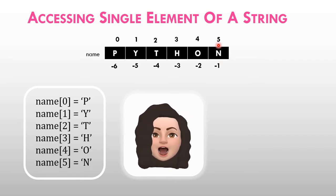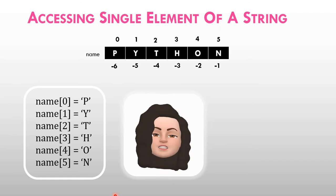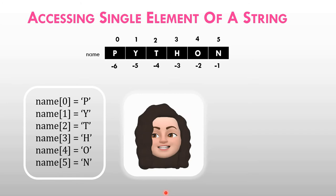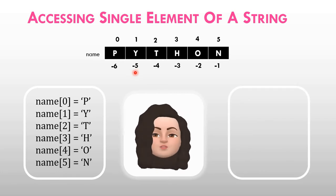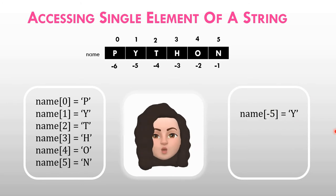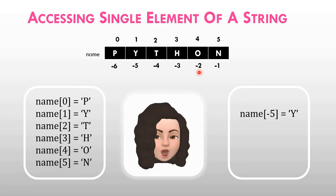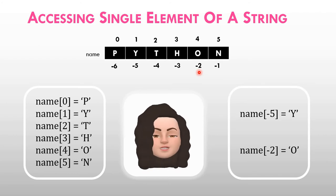We have accessed individual characters using forward indexing. If you want to access using backward indexing, for example, the character y using backward indexing has index minus 5, so name[-5] equals y. The index of o is minus 2, so name[-2] equals o.